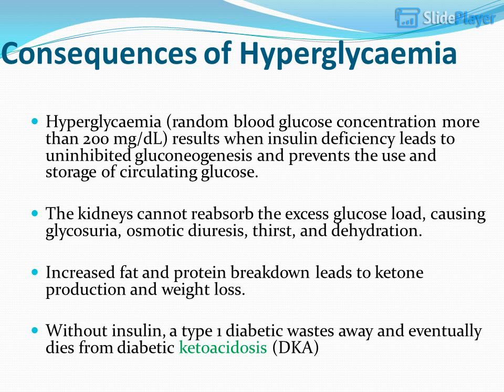Consequences of hyperglycemia: A random blood glucose concentration of more than 200 mg/dL results when insulin deficiency leads to uninhibited gluconeogenesis and prevents the use and storage of circulating glucose. The kidneys cannot reabsorb the excess glucose load, causing glycosuria, osmotic diuresis, thirst, and dehydration. Increased fat and protein breakdown leads to ketone production and weight loss. Without insulin, a type 1 diabetic wastes away and eventually dies from diabetic ketoacidosis.